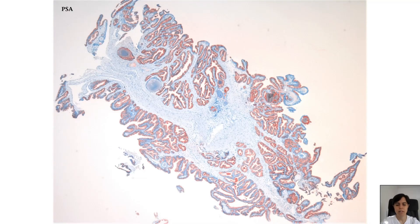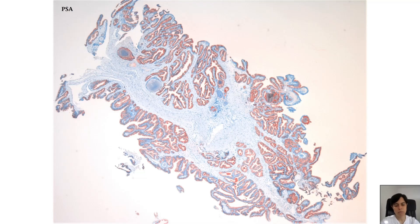Let's see some stains. PSA, or NKX3.1 if you prefer, will beautifully highlight the prostatic nature of the epithelium lining these lesions. But actually, you don't need to perform stains on this lesion — this is a purely histomorphological diagnosis. Stains were done in this case just for illustrative purposes. But if you do perform them, PSA will nicely highlight the luminal cells of the prostatic epithelium.